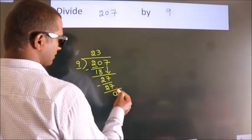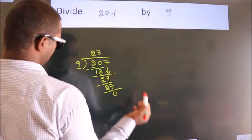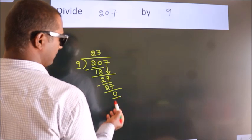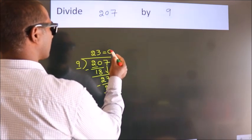After this, no more numbers to bring down. And we got remainder 0. So, this is our quotient.